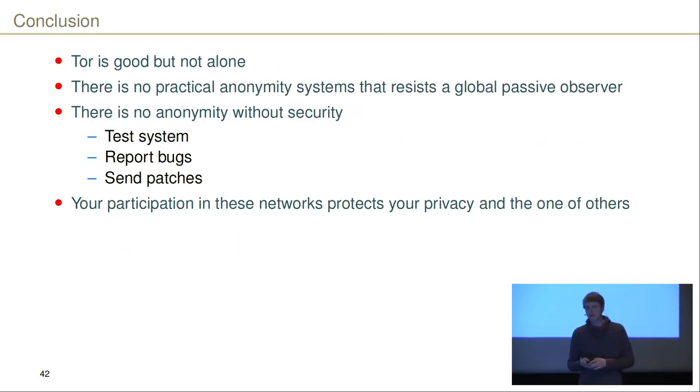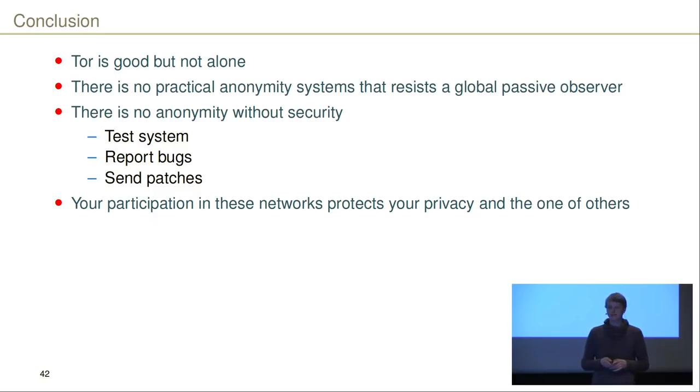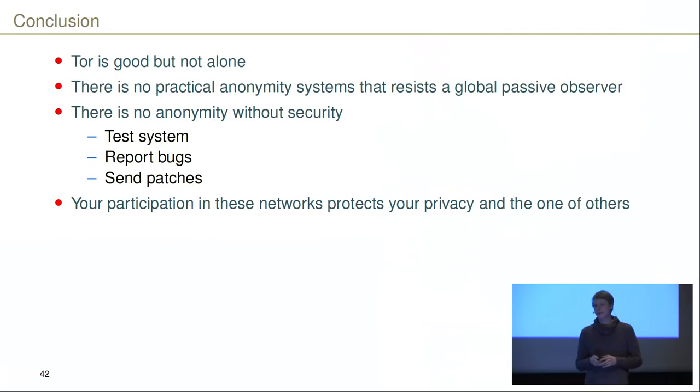My conclusion is that Tor is good, but there are certainly other options which you might want to explore. There is no practical anonymity system out there which actually resists a global passive observer. If we want to achieve anonymity, this will not be possible without security. It's very much appreciated if you go ahead and test these systems, report bugs, and send patches to improve them. Your participation in these networks not only improves your personal privacy, but increases the anonymity set and thereby also improves the privacy of others. Thank you.